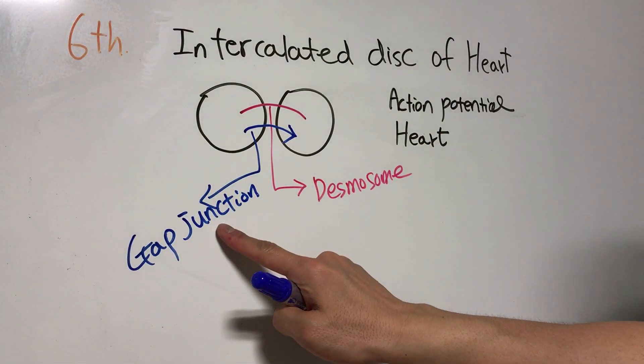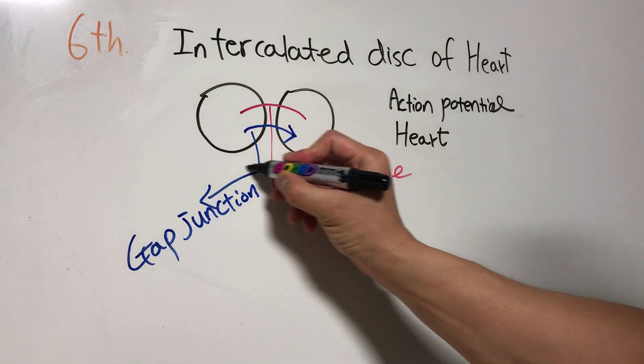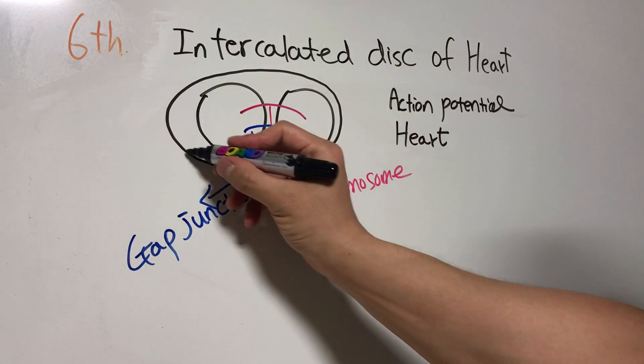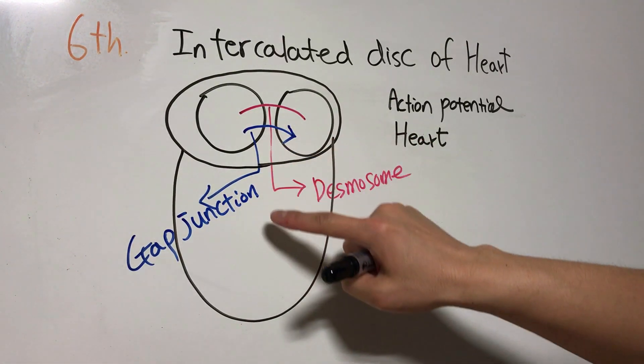But there is no gap junction between the atrium and ventricle. In addition, the atrium and ventricle are separate.